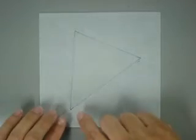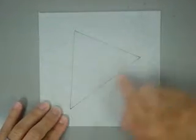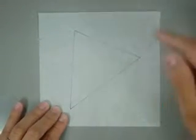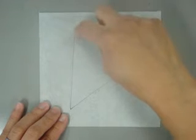To find an altitude, select a base, being one of the sides of the triangle. Let's choose this side to be our base. The opposite vertex is located here.